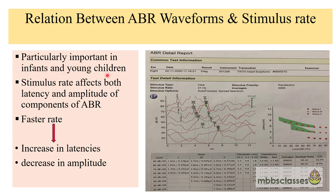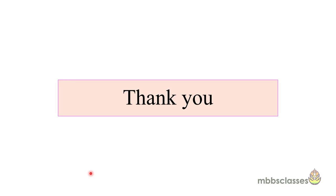The next important factor is the stimulus rate, which is particularly important when reading ABR in infants and young children. Faster rates increase the latencies. For clinical applications, the rate is generally selected between 11.1 to 71.1 per second. For clinical purposes a rate of 11.1, 21, or 31 per second is generally used. Whenever we give a faster rate of stimuli, it increases the latency and decreases the amplitude of the waveforms. With this I come to an end of this video. I hope you have understood the basics of ABR, its uses, and the various factors you must consider while interpreting the waveform. Thank you for watching.